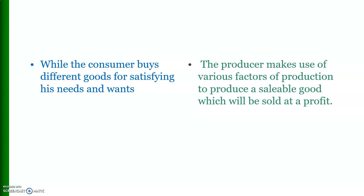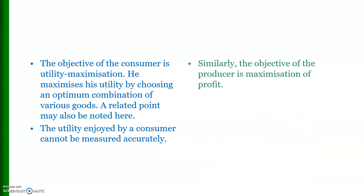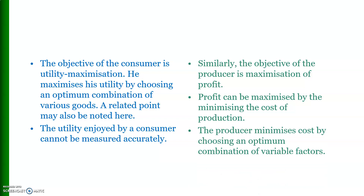The objective of the consumer is to maximize utility by choosing an optimum combination of various goods. It may also be noted that the utility enjoyed by a consumer cannot be measured accurately. Similarly, the objective of the producer is to maximize profit, not the output. Profit can be maximized by minimizing the cost of production, and the producer minimizes cost by choosing an optimum combination of variable inputs.